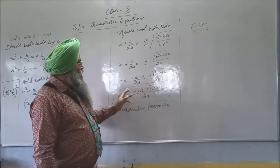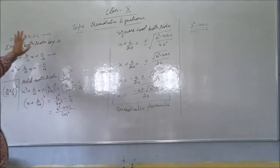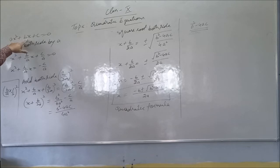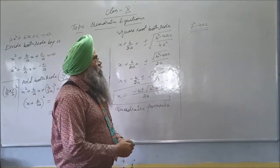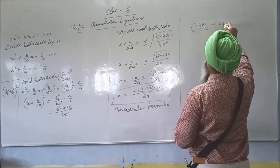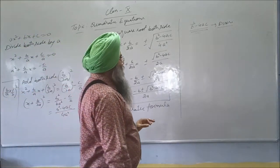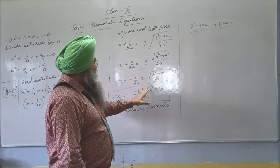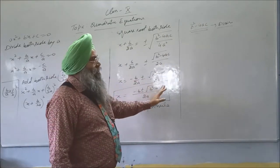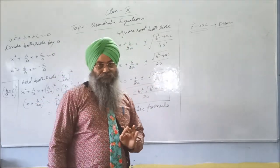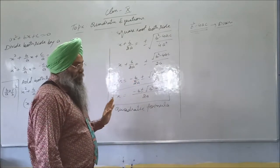The important part of this quadratic formula is b squared minus 4ac. Here, a is the coefficient of x squared, b is the coefficient of x, and c is the constant. This particular part is known as the discriminant. What is the discriminant? It is a very important part of the quadratic formula. If b squared minus 4ac is negative, then we say this equation has no real roots.